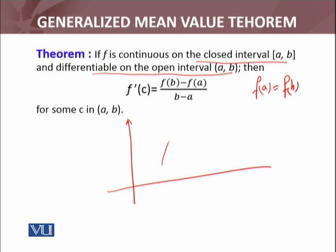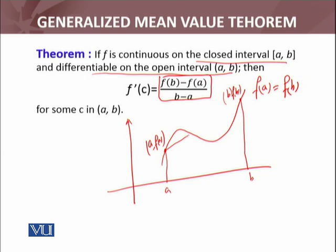Let me show you graphically. It states that if you have f, let's say this is f(x), this is point a, this is point b. The point (b, f(b)) is here, and the point (a, f(a)) is here. This is in fact the slope of that secant line.